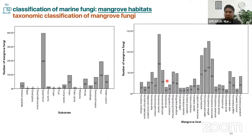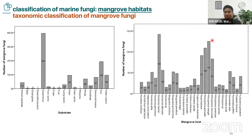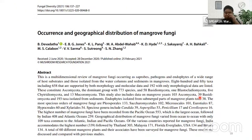These are the substrates. Usually the study is on submerged decaying wood, and mostly from the host Avicennia — this is Avicennia marina — followed by Rhizophora mangle and Rhizophora apiculata. You can read more about the different taxa. We listed them all in the current geographical distribution of mangrove fungi — you can see all the taxa, their distribution, their substrate, and further information.